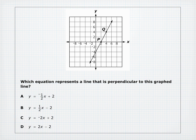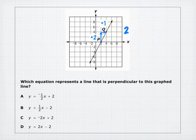Which equation represents a line perpendicular to the graphed line? Count the slope of the given line using points P and Q: rise up 2, run right 1 gives slope 2. The negative reciprocal of 2 is negative 1 over 2, so the perpendicular line has slope negative 1 over 2, answer A.